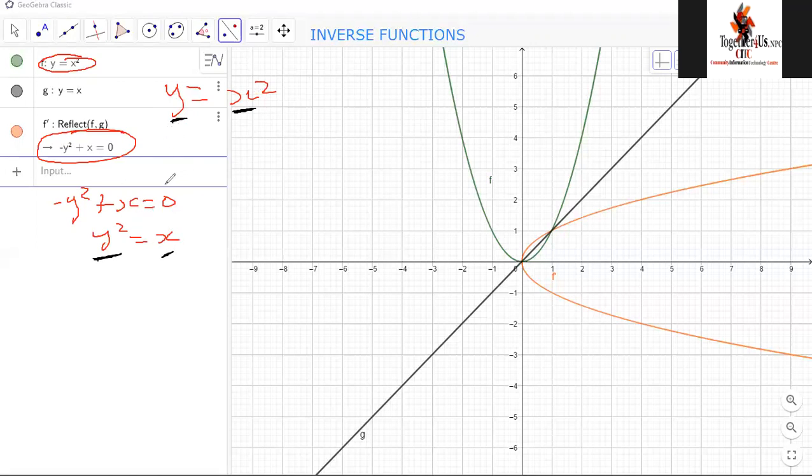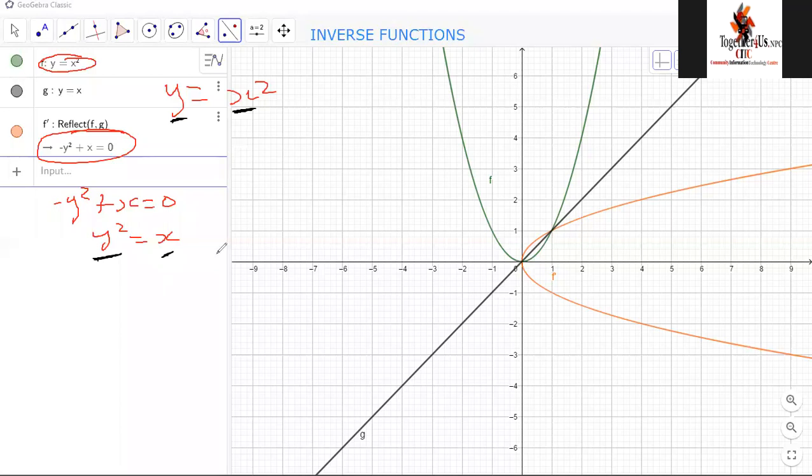So in other words, where you see x, you put a y, where you see a y, you put an x, whichever way you say it. But the principle in finding an inverse is that you've got to interchange, you've got to exchange the two variables, the position of the two variables.